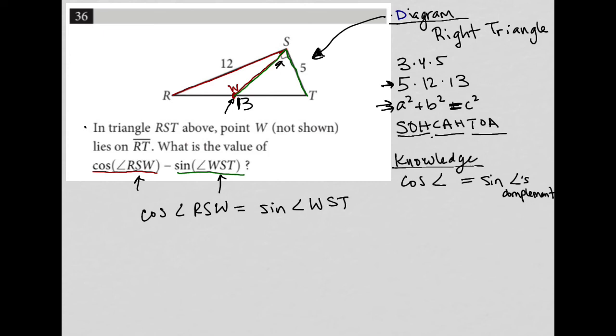Now, if they're equal to each other, but we're subtracting them from each other, that means this answer here, the cosine of angle RSW minus the sine of angle WST, that must equal zero.